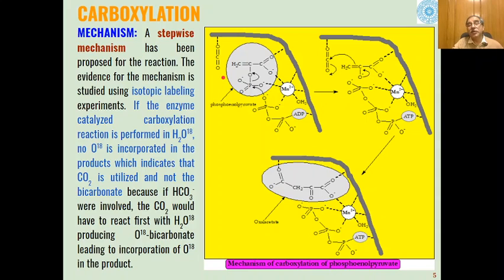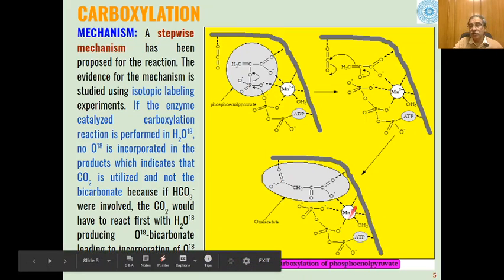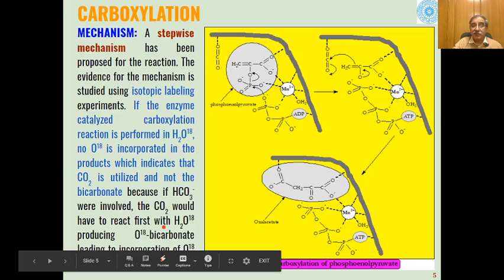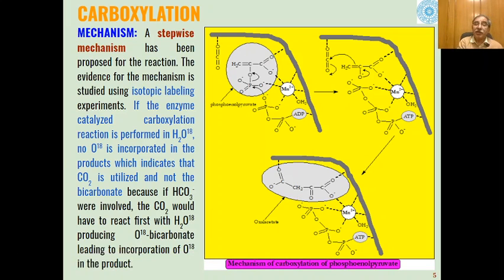Because if bicarbonate is involved, then carbon dioxide will react with this water and we will have bicarbonate where one of the oxygens will be O18. So if the product has O18 incorporated in it, then bicarbonate is acting as a substrate. When there is no incorporation of O18, that means carbon dioxide is acting as a substrate. This is how we can differentiate between the two mechanisms.